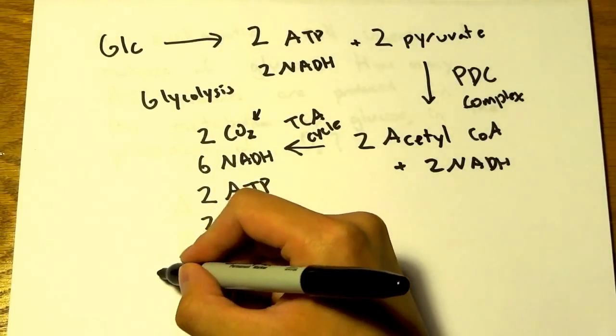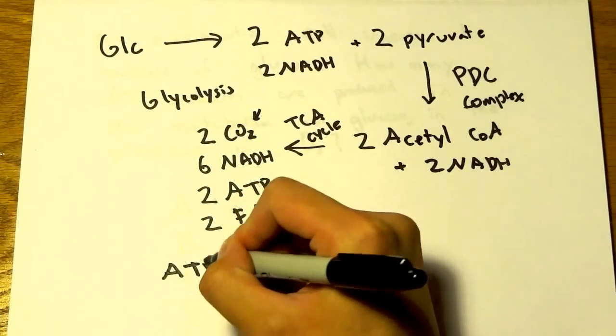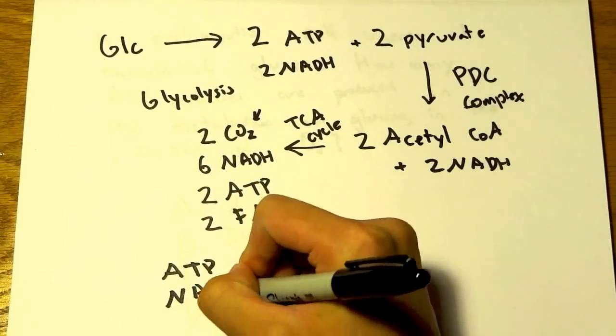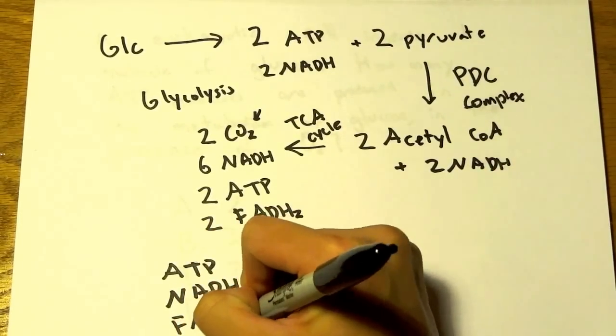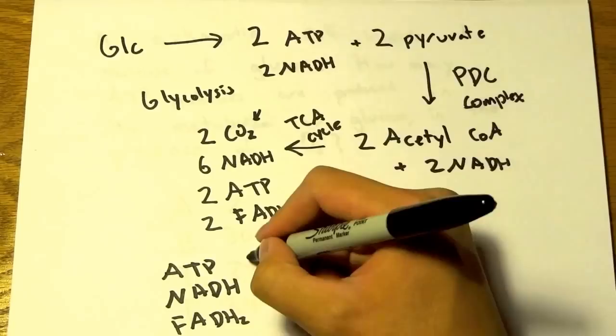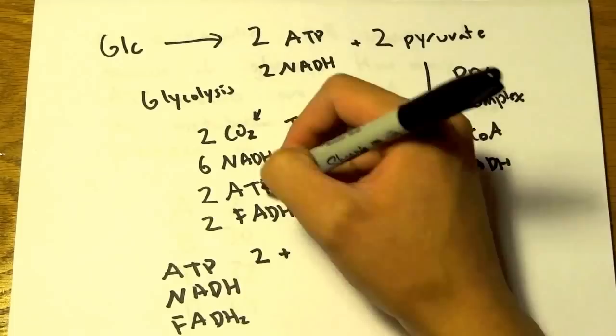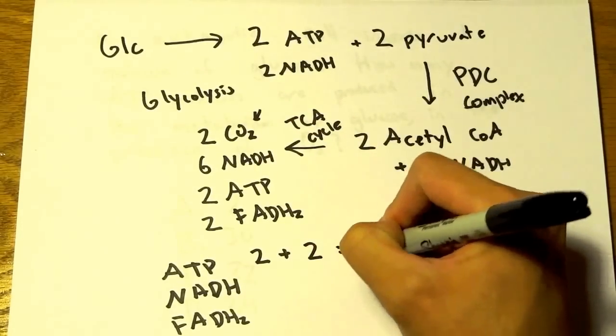Next, we want to add up everything. Let's count how many ATPs, NADH, and FADH2 we had. I see 2 ATPs here and 2 more here, so we have 4 total.